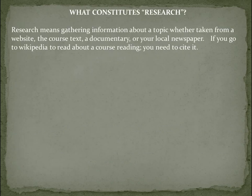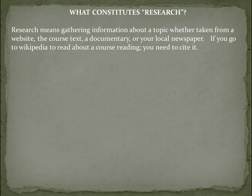One thing that students often get confused about is the term research. Students often get stuck saying, I was just looking stuff up, I didn't actually research the topic. What students don't understand is that research means gathering information about a topic, whether taken from a website, the course text, a documentary, or your local newspaper. If you go to Wikipedia to read about a course reading, you need to cite it. Anytime you look for more information and understanding about something that you're going to write about, you are performing research, and it's important to keep track of those things.